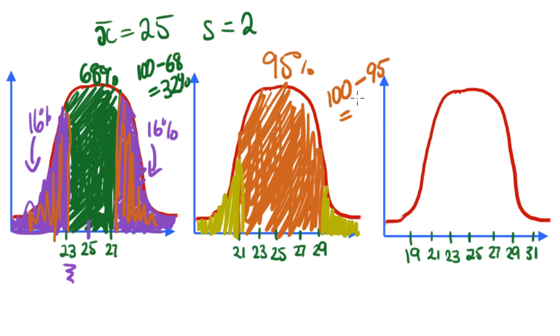100 minus 95 is 5%. So in these two tails combined there's 5%. So what does that mean is in each one of them? Well it's half of that 5. So in this tail there's going to be 2.5% and in this tail there's going to be 2.5% because then we have 2.5 plus 95 plus this next 2.5 and all of that added up gives us 100.